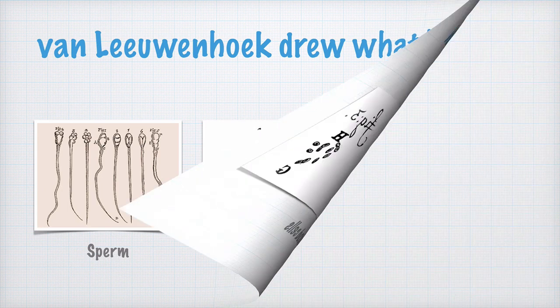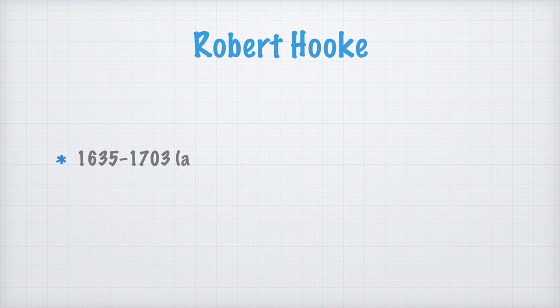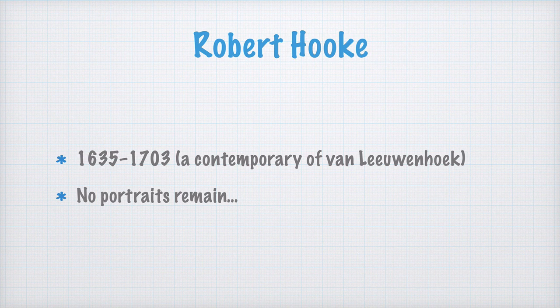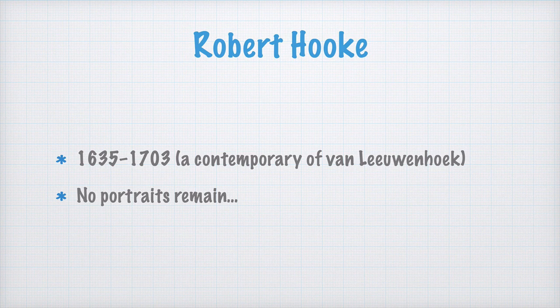Another type of microscope was built by Robert Hooke, a contemporary of van Leeuwenhoek. Here, I would like to show you a picture of Hooke, but unfortunately, no portraits of him remain to this day. Some say it's because he was very ugly. Others, that Isaac Newton, his arch-enemy, destroyed all the portraits when Hooke died.